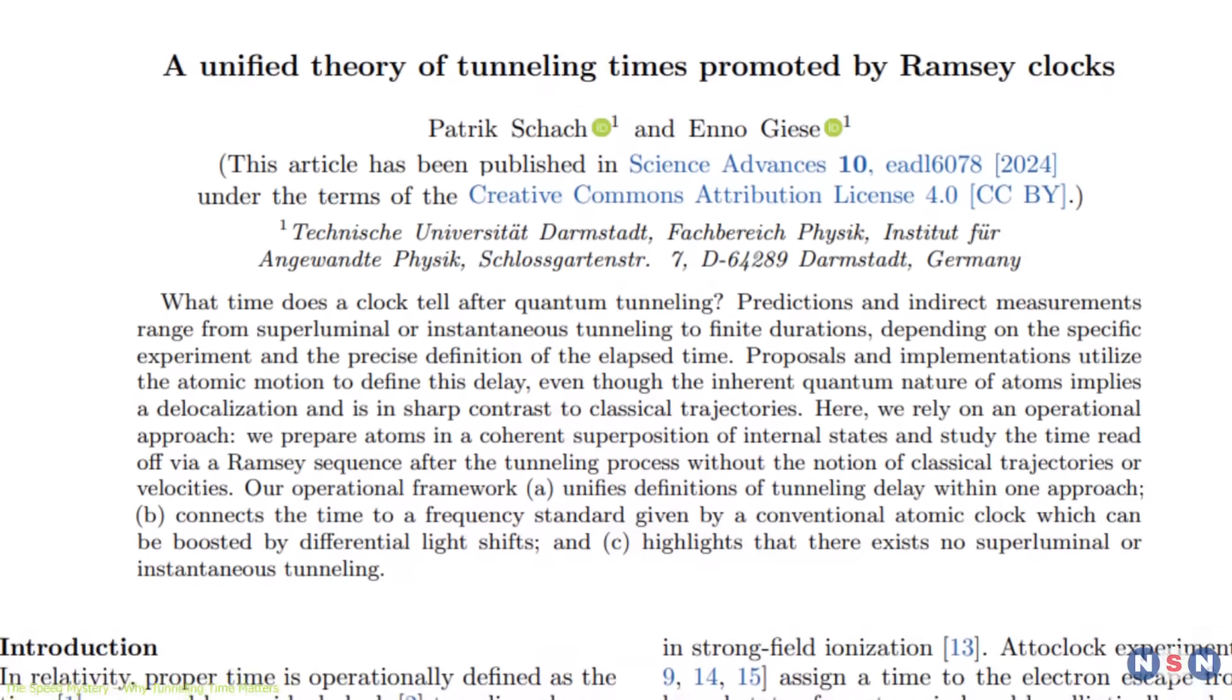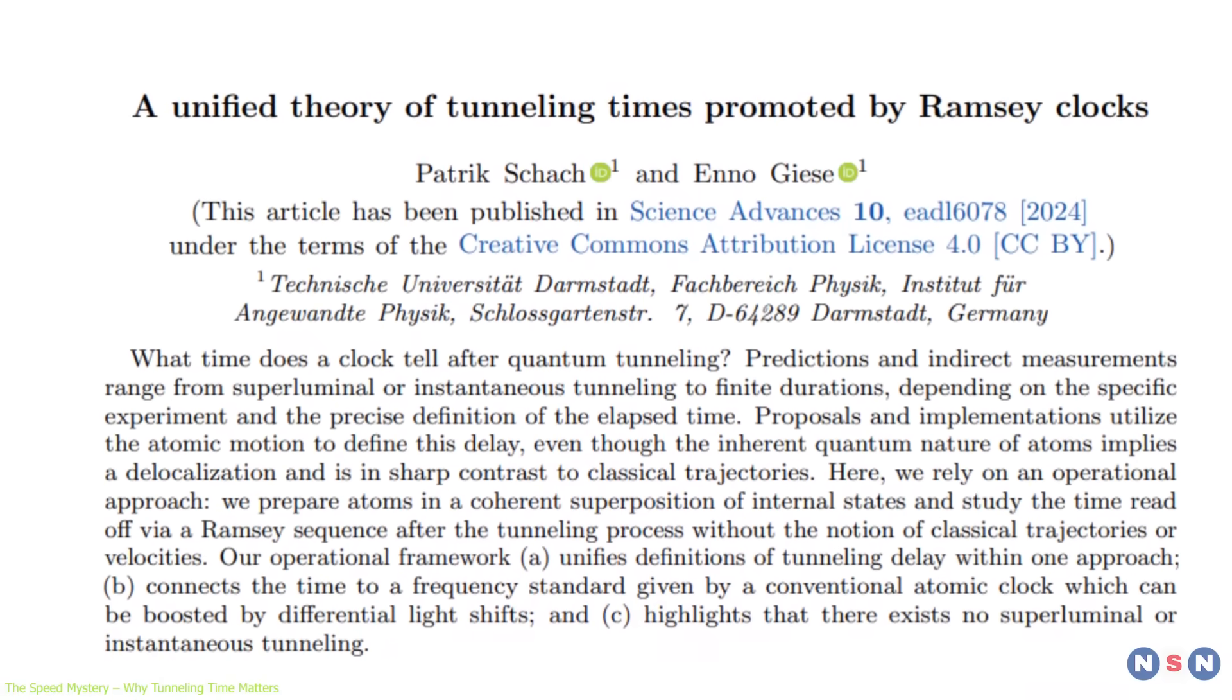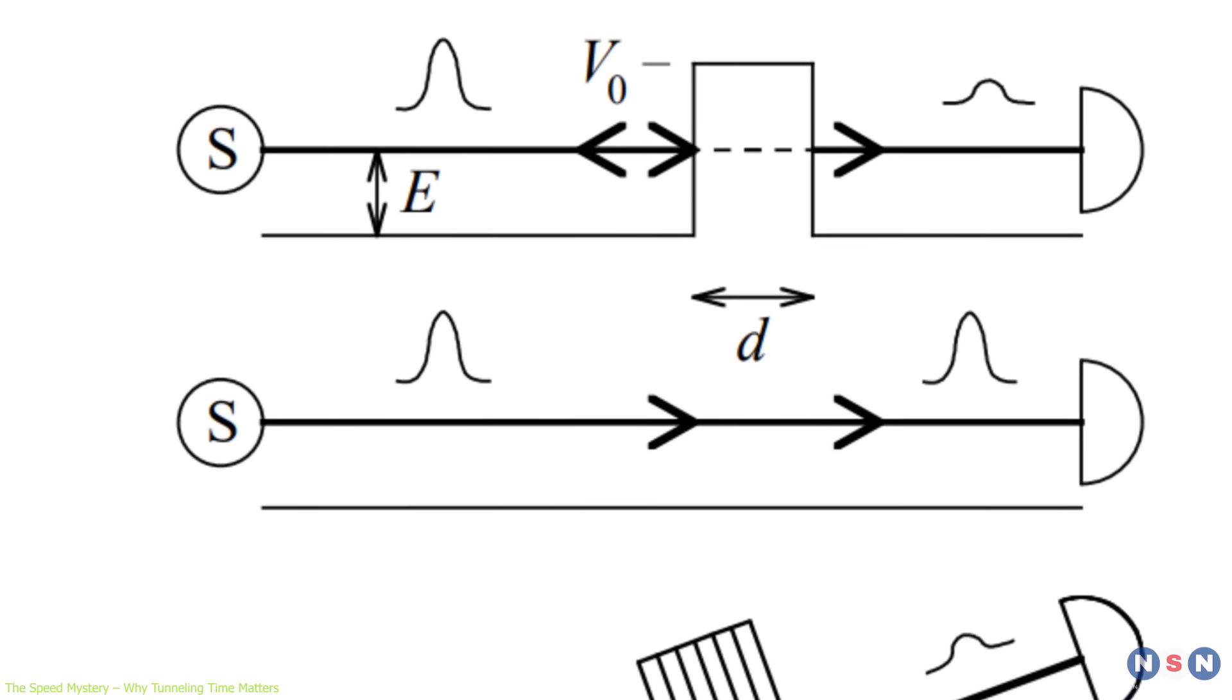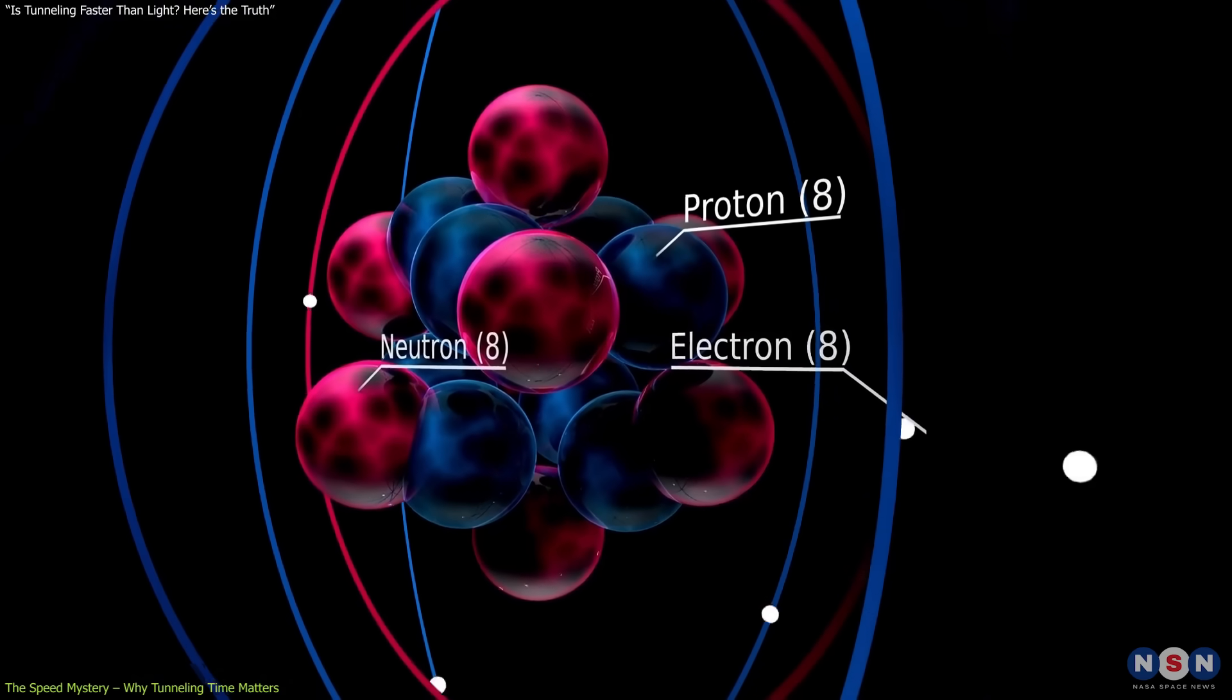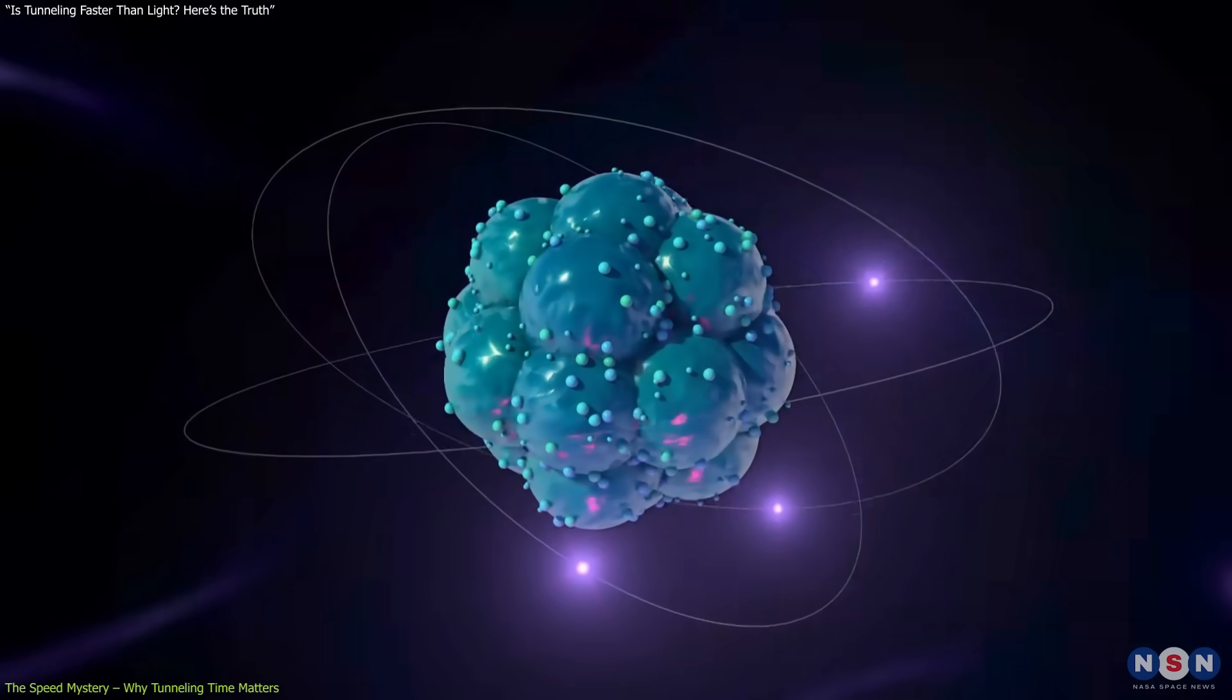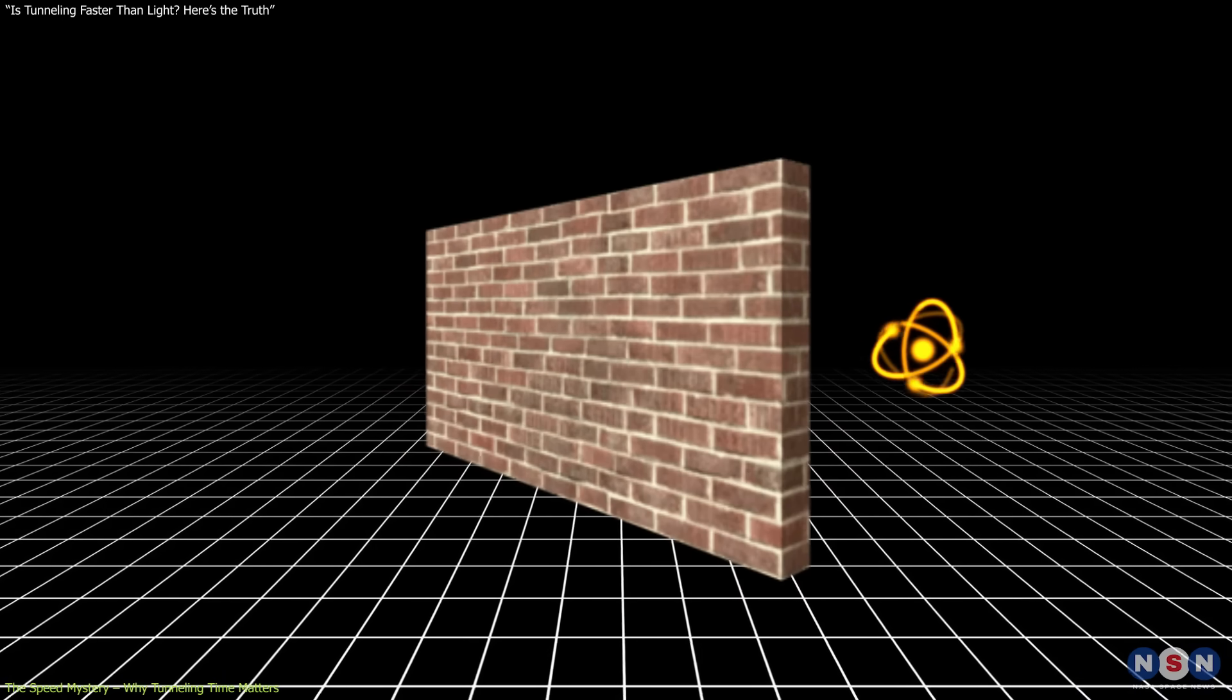The new framework introduced by Patrick Schock and N.O. Giese resolves these inconsistencies through a unified operational theory of tunneling time. Rather than relying on wave crests or semi-classical assumptions, they use the atom's internal oscillations as a clock, treating each atom as a self-contained timing device. This approach abandons classical analogies entirely, acknowledging that tunneling particles exist in delocalized quantum states where the notion of arrival time becomes fuzzy.